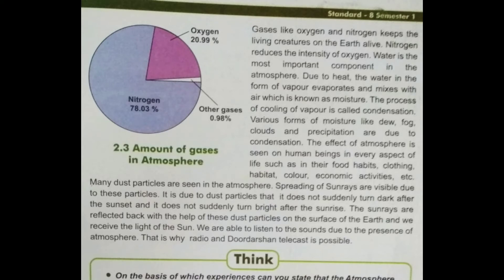Oxygen and nitrogen keep the living creatures on the earth alive — 'alive' means jivit rakhna. Nitrogen reduces the intensity of oxygen, which helps regulate the atmosphere for living beings.